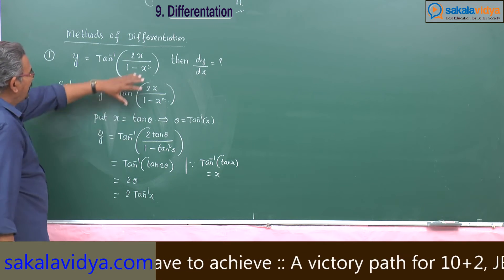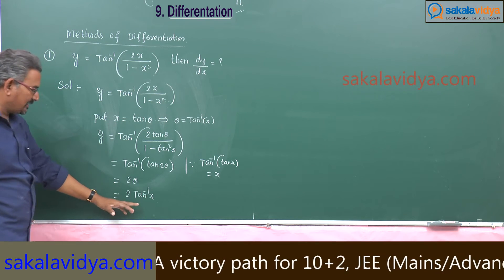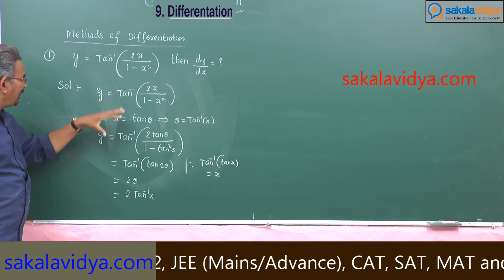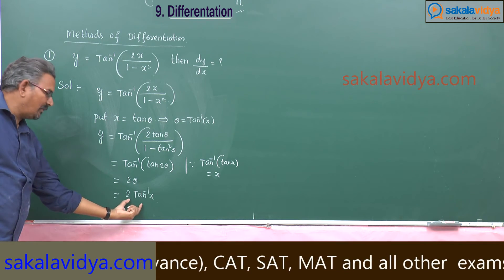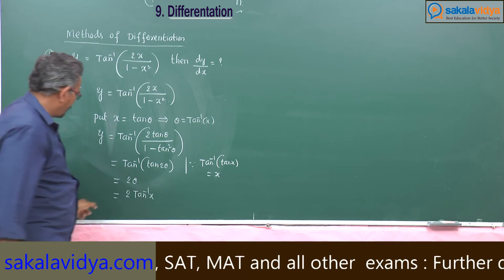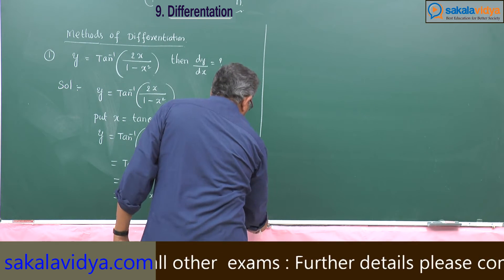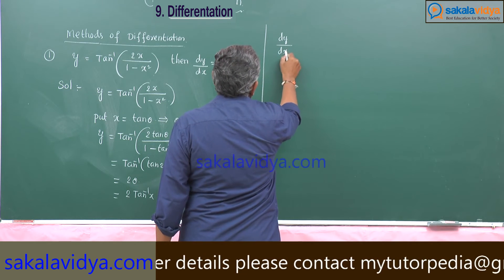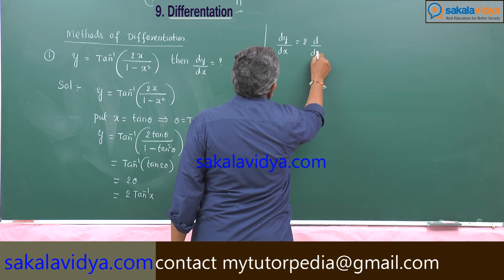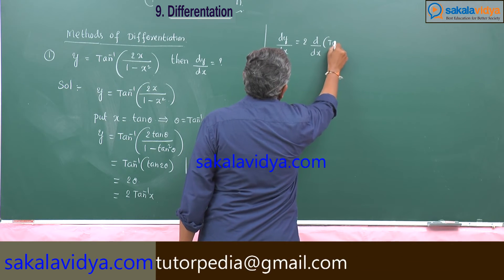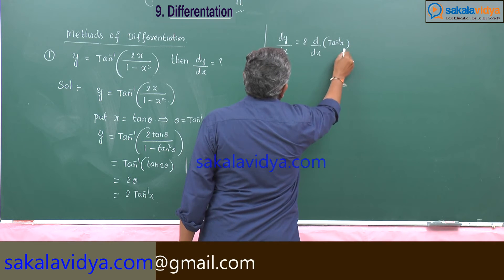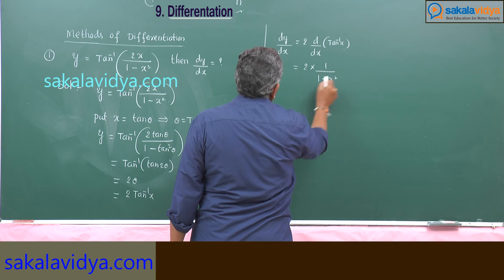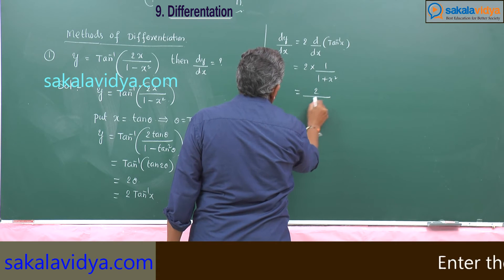That means tan inverse of 2x by 1 minus x squared is the same as 2 tan inverse x. So the derivative dy by dx is nothing but the derivative of 2 tan inverse x. Differentiating with respect to x, dy by dx is equal to 2 into d/dx of tan inverse x, which equals 2 into 1 by 1 plus x squared. So the answer is 2 by 1 plus x squared.